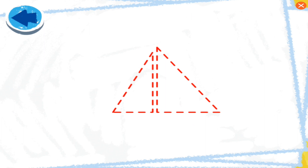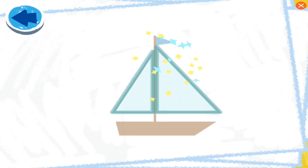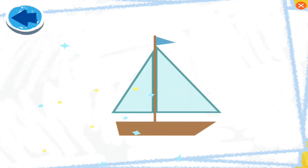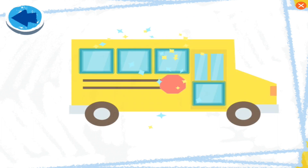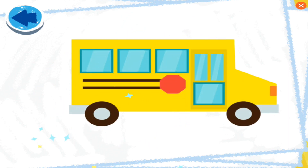This picture has triangles! Boy, Elmo wonders what it is! Cool! That's a sailboat! This picture has squares! Boy, Elmo wonders what it is! Nice square tracing! Cool! That's a school bus!